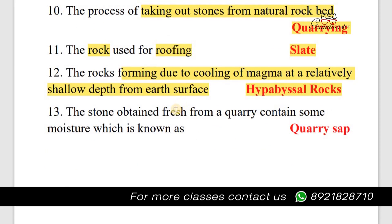Next question: The stone obtained fresh from a quarry contains some moisture, which is known as quarry sap.